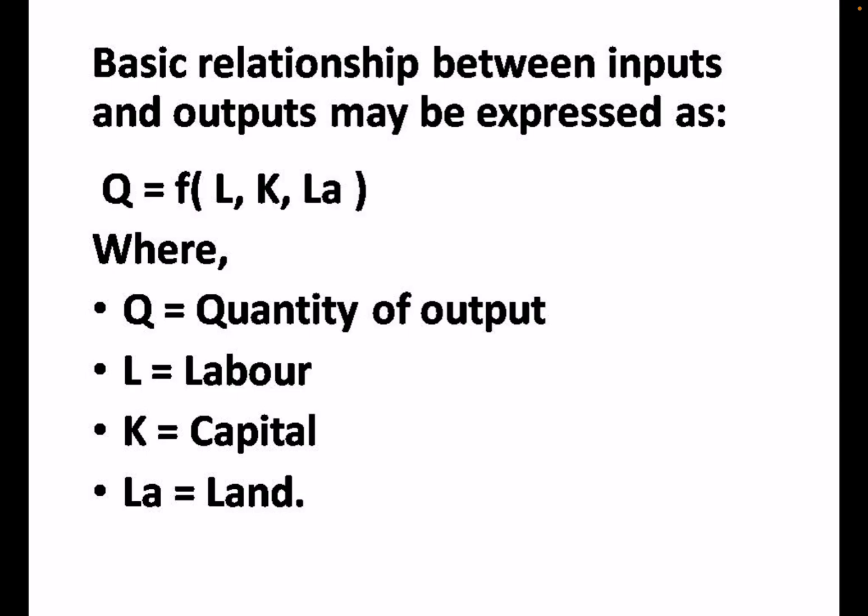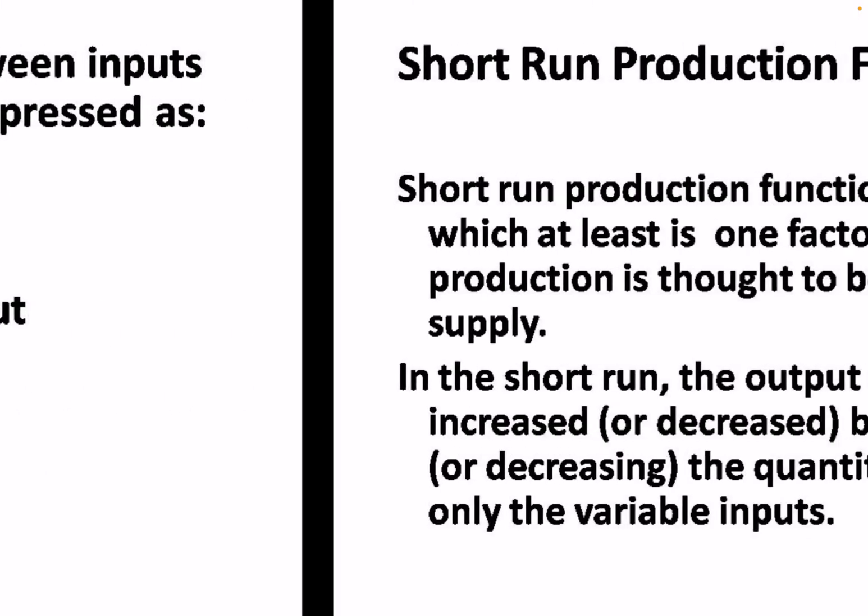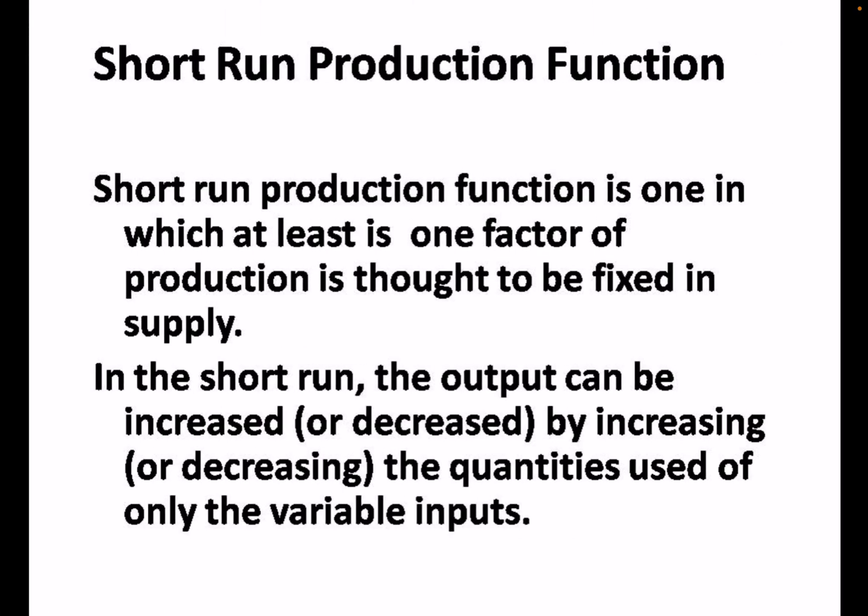In this expression, Q is output, L is labor, K is capital, and La is land. Short-run production function is such a production function in which one factor of production is fixed and the other one is variable.